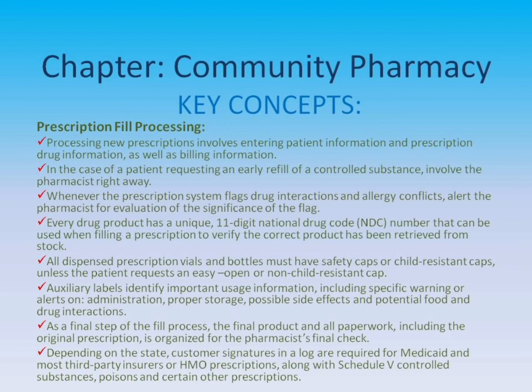Auxiliary labels identify important usage information including specific warnings or alerts on administration, proper storage, possible side effects, and potential food and drug interactions. As a final step of the fill process, the final product and all paperwork, including the original prescription, is organized for the pharmacist's final check. Depending on the state, customer signatures in a log are required for Medicaid and most third-party insurers or HMO prescriptions, along with Schedule V controlled substances, poisons, and certain other prescriptions.